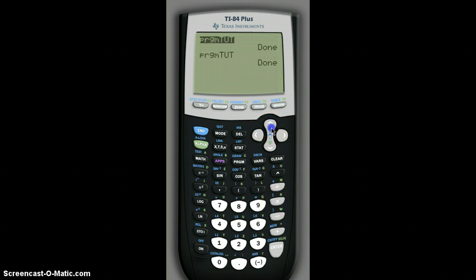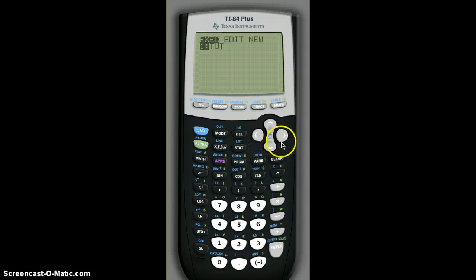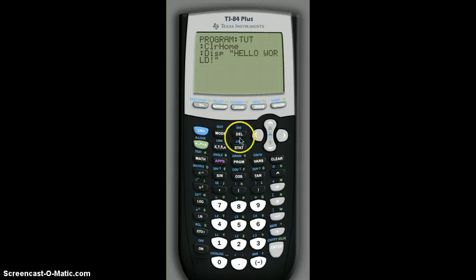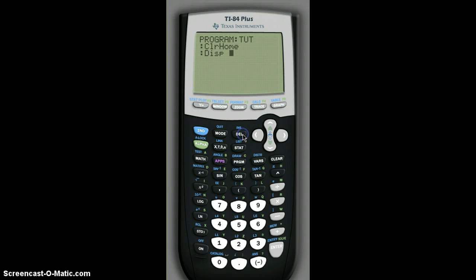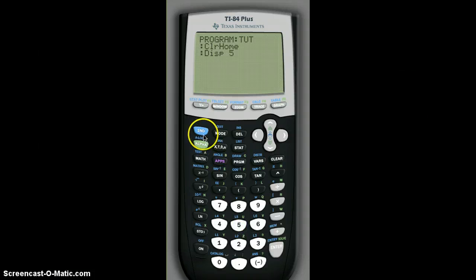So that's pretty much the basics of display. You can display one word. You can display numbers, but numbers are weird. They display on one side, on the right side of the screen.